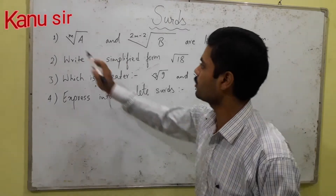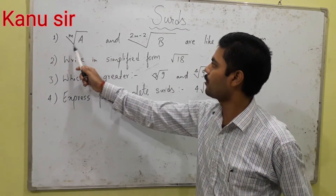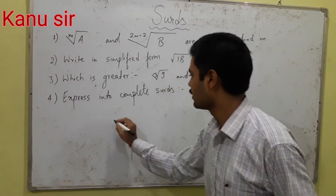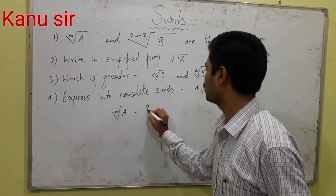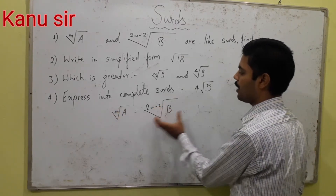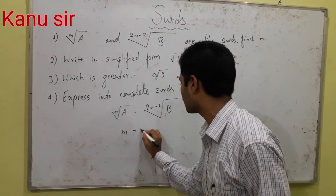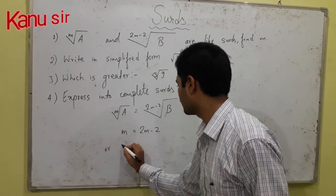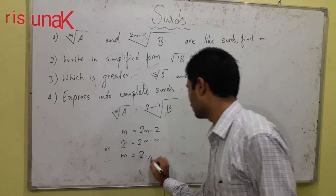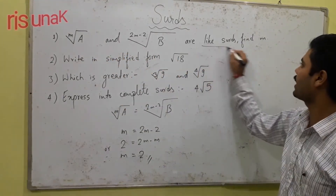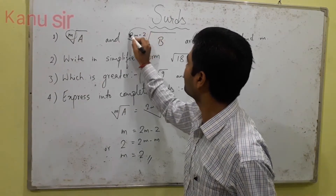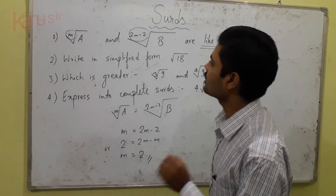In question number 1: if m to the power root a and 2m minus 2 to the power root b are like surds — like surds means their values are the same, they are equal. So you can write: a equals 2m minus 2, and b. It means the values of root a and root b are the same. So you can write m equals 2m minus 2, or rearranging, 2m minus m equals 2. Therefore the value of m is 2. Like surds means their index or power or base is the same value.